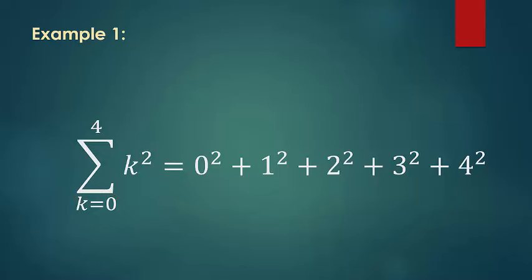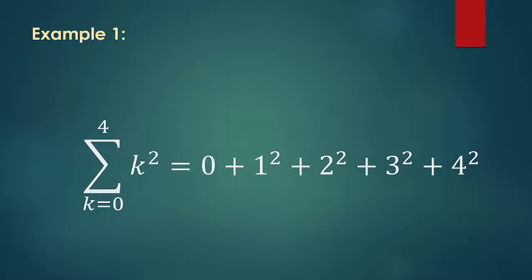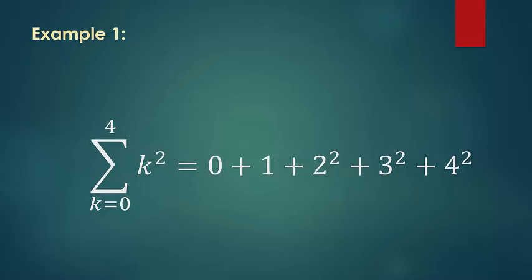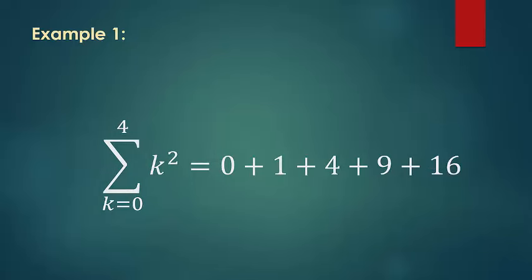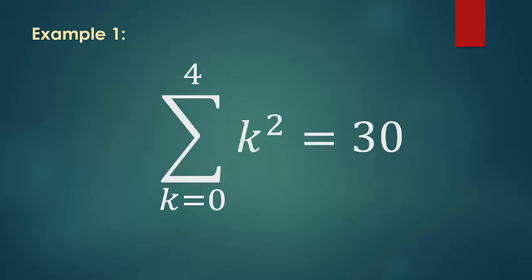Now we just go ahead and evaluate the elements. 0 squared is 0, 1 squared is 1, 2 squared is 4, 9, 16, and when I add these all together, I get that the summation from 0 to 4 of k squared is equal to 30.